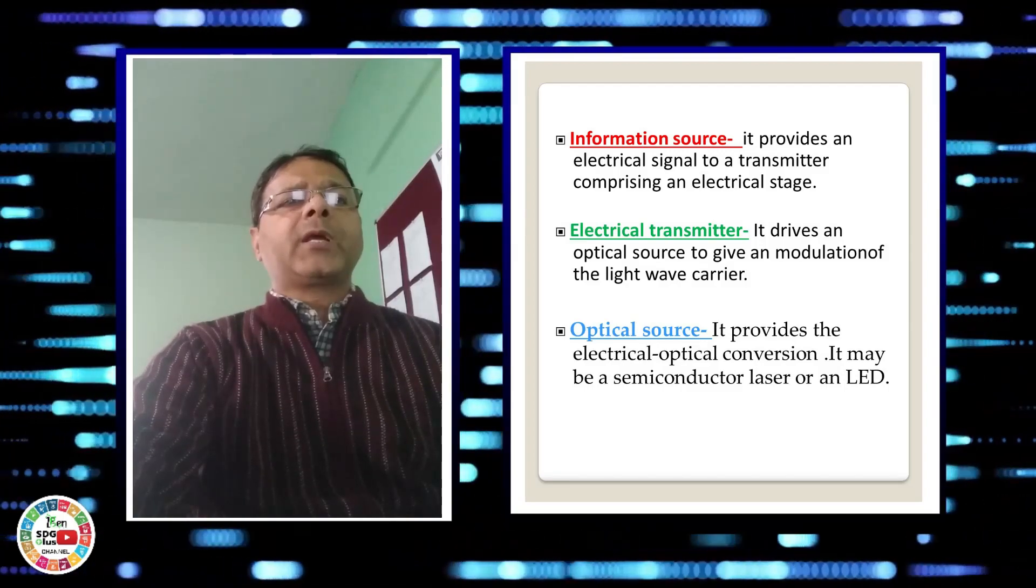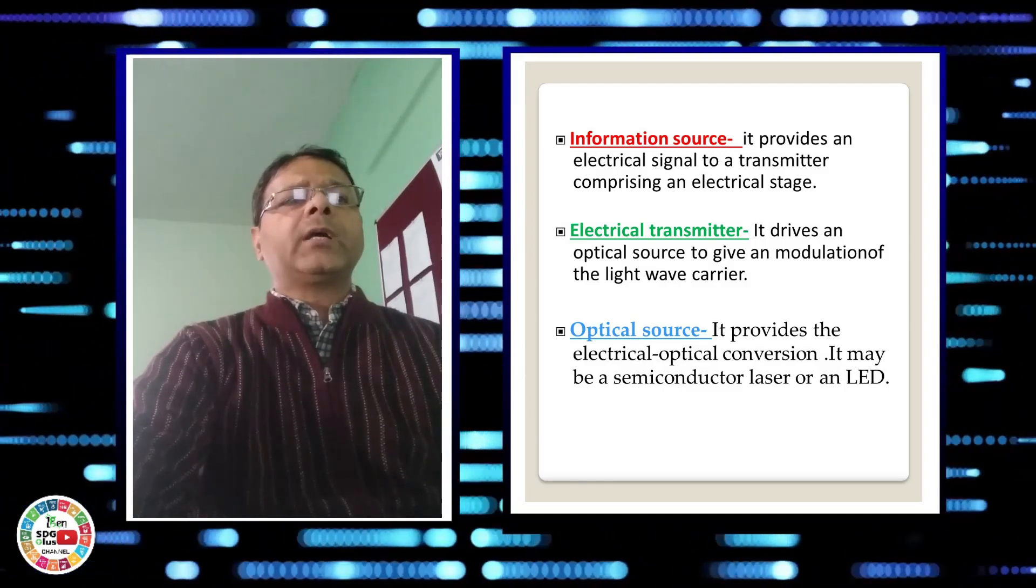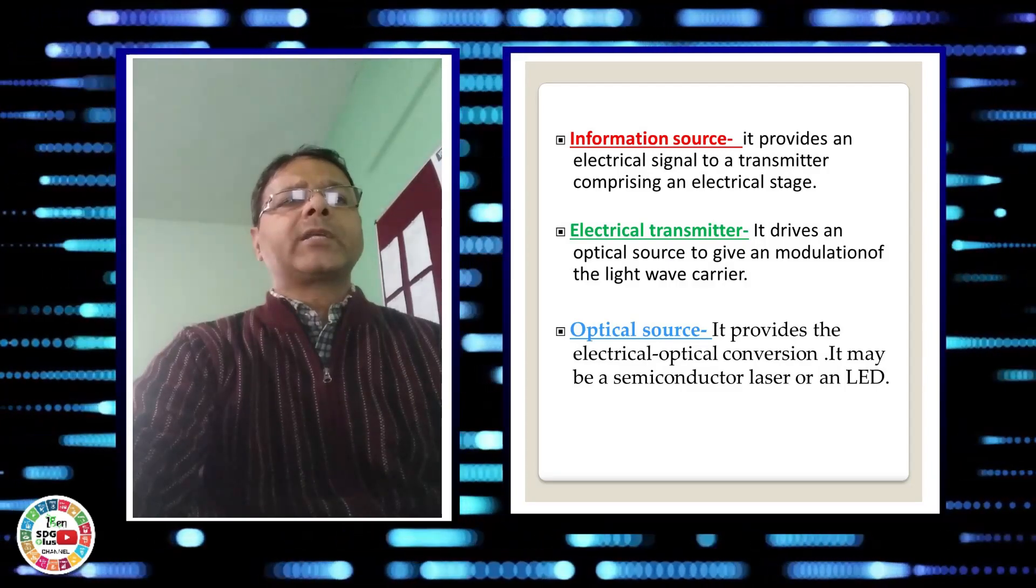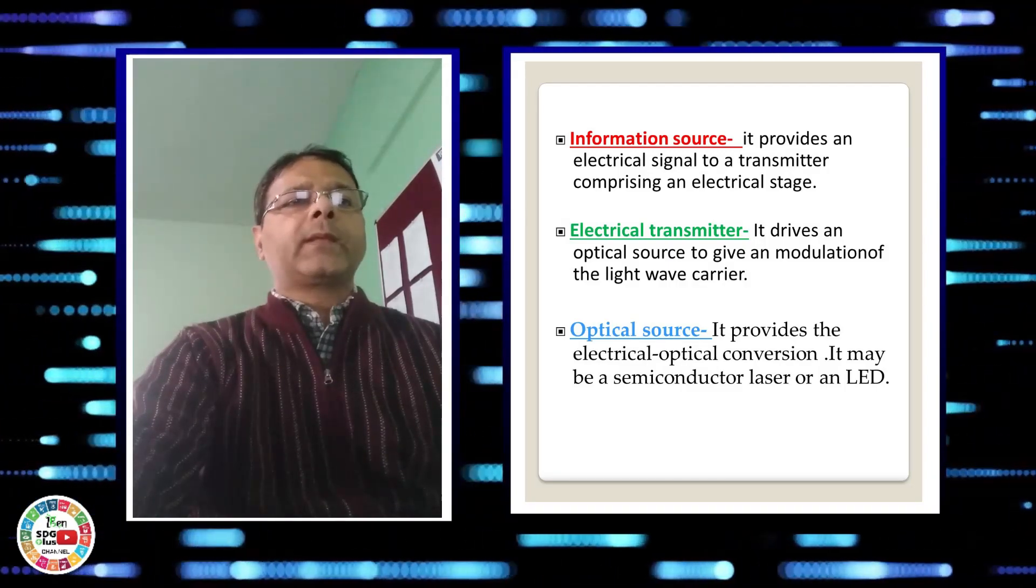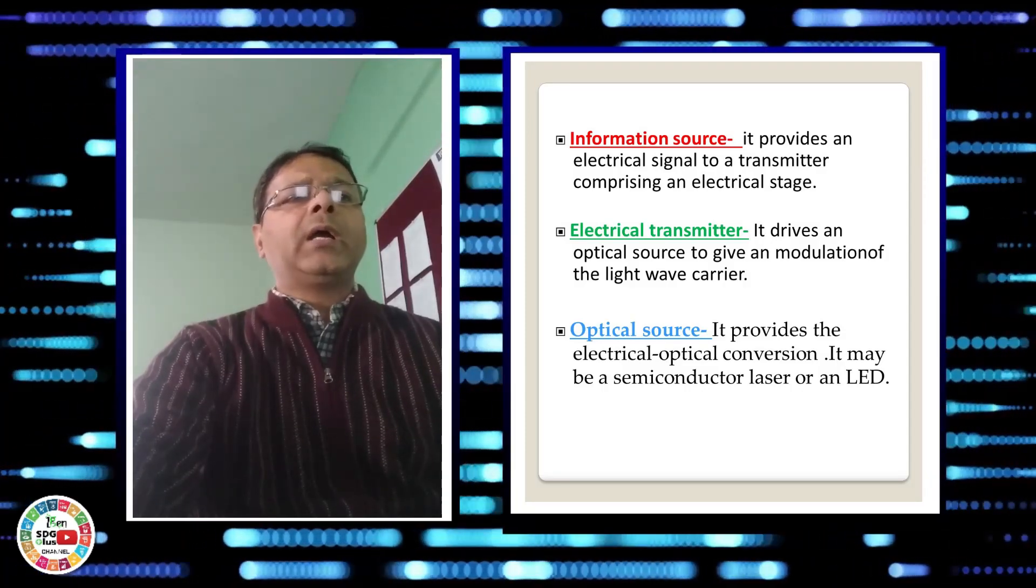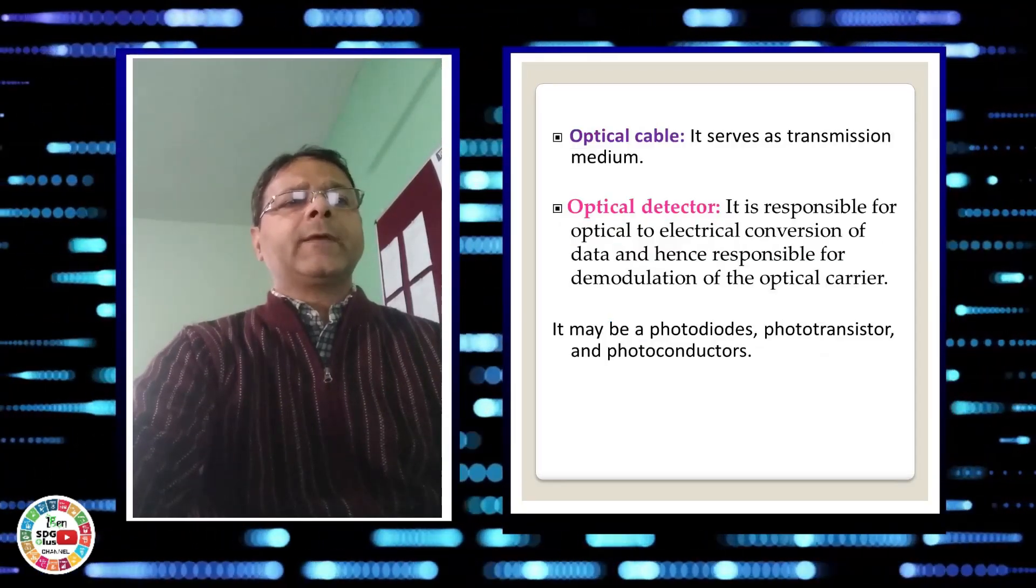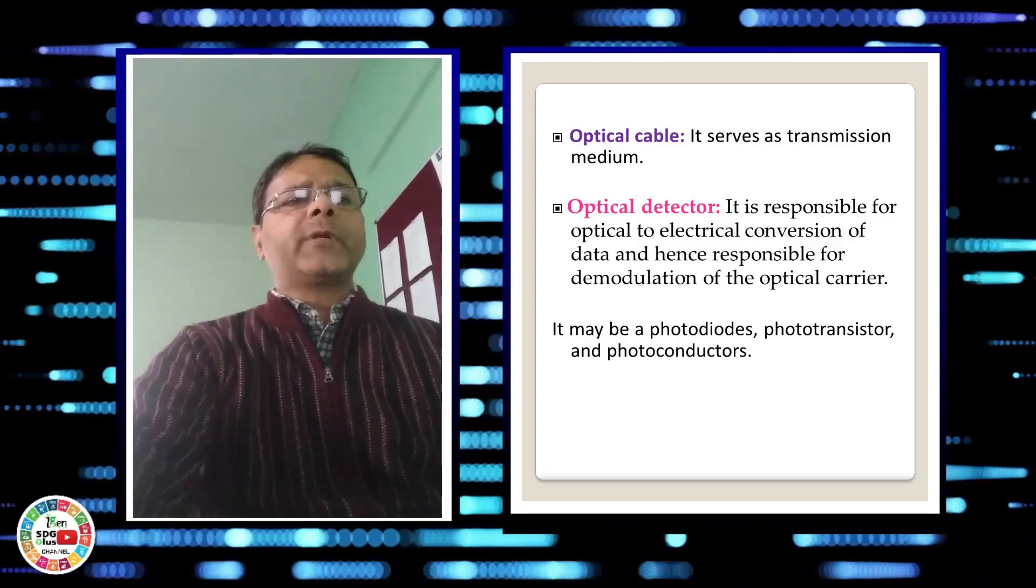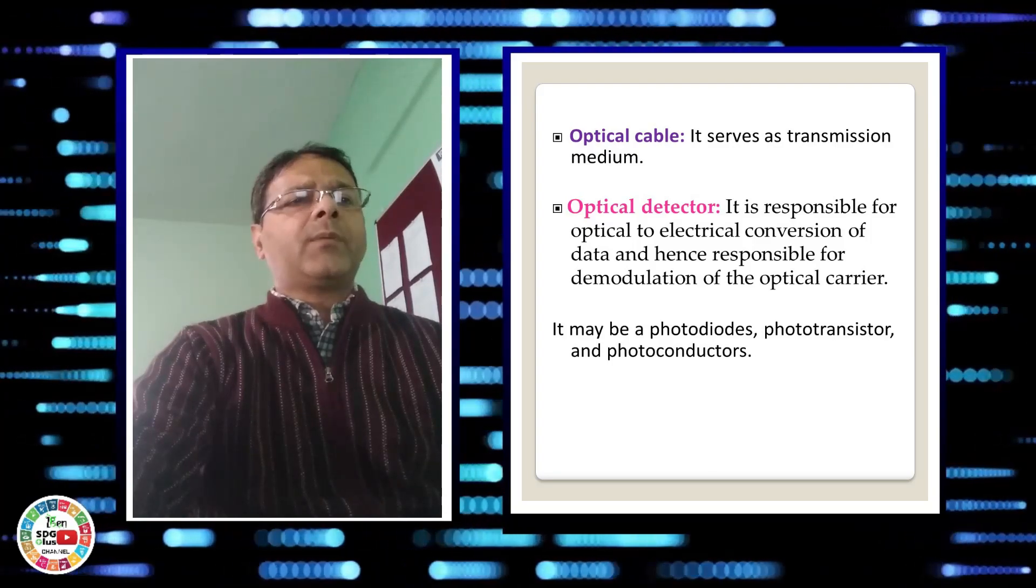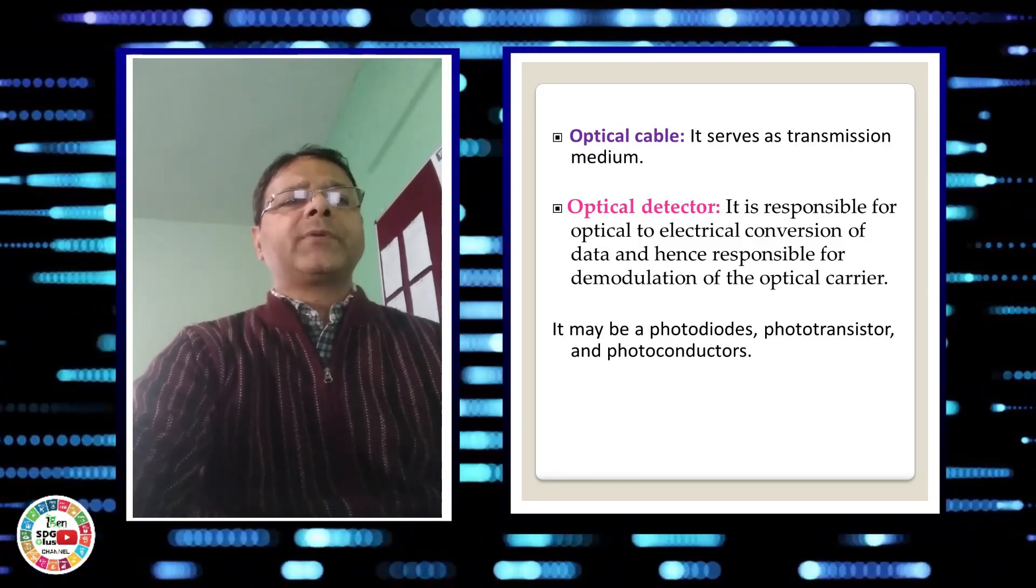The optical source is used to convert electrical signals into light signals. An example of optical source is LED or laser. The electrical source is used to boost the light signals, whereas the optical fiber acts as a medium which is used to transmit the light signals from the transmitting end to the receiving end.